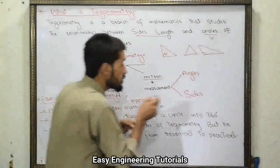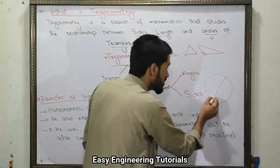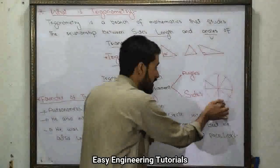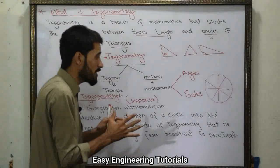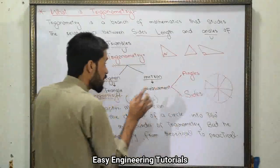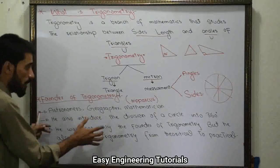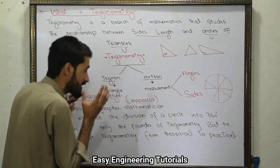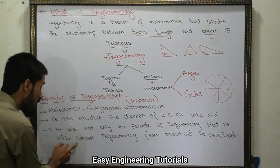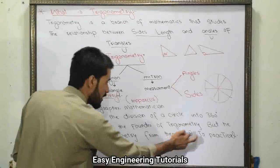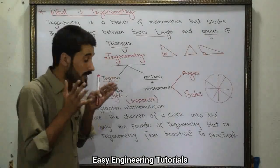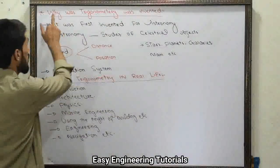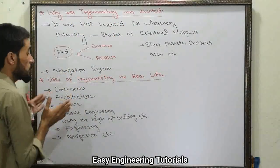Hipparchus ne ek circle ko 360 degrees mein divide kiya. Usne pehli baar bataya ke ek circle 360 degrees par mushtamil hota hai — yeh concept Hipparchus ne introduce kiya tha. Aur Hipparchus sirf trigonometry ka founder hi nahi tha, balki usne trigonometry ko theoretical se practical mein bhi convert kiya.